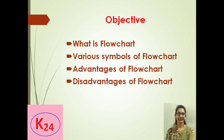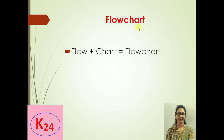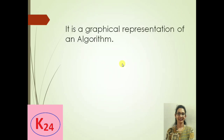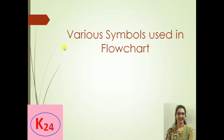Welcome to the channel Knowledge 24. The objective of this lecture is: what is a flowchart, the various symbols of a flowchart, and its advantages and disadvantages. A flowchart is a combination of two words — flow and chart — representing the flow of a process through a chart. The general definition is that it is a graphical or pictorial representation of an algorithm, where an algorithm is a step-by-step procedure to solve any programming problem.